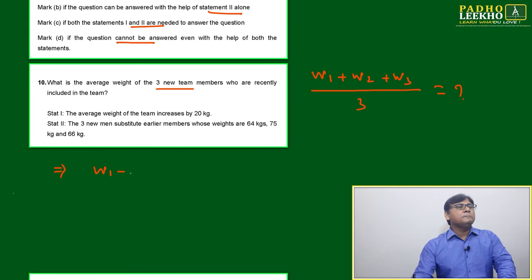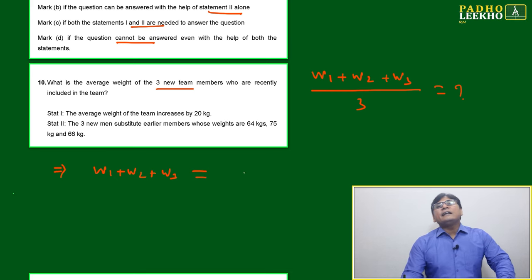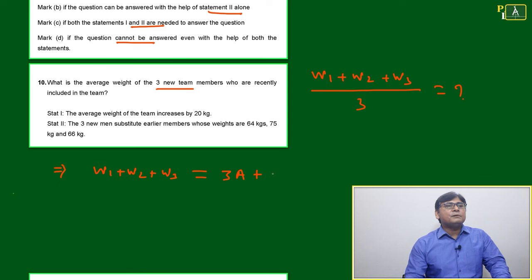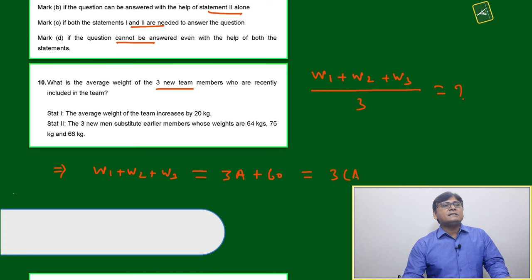Now statement 1 is telling the average weight of the team increases by 20. Average weight of team increases means once these three are included, average weight has increased by 20. Means just suppose earlier average was A, then once you will add these three members, then you can say A plus A plus A equals 3A plus 20.